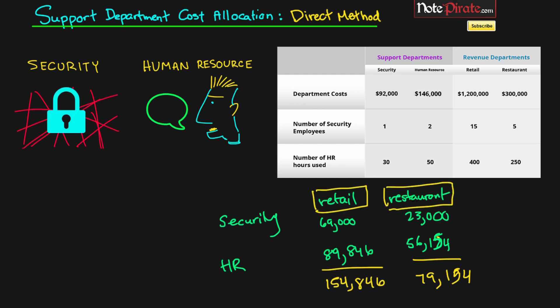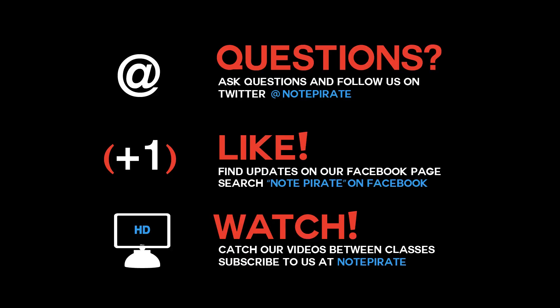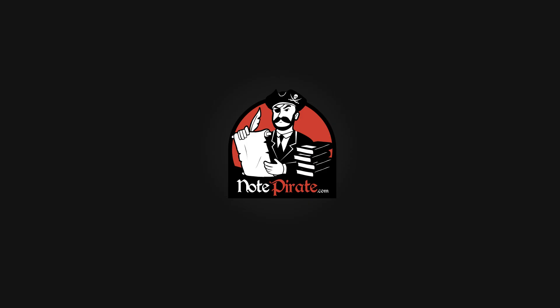These totals will differ depending on whether we use the direct method, the step down method, or the reciprocal method. Follow these calculations and you can't go wrong. I'll see you in the next tutorial when we talk about the step down method. If you have any questions, tweet us at Note Pirate, like us on Facebook for updates, and thanks for watching.